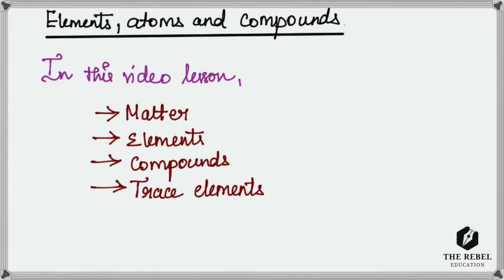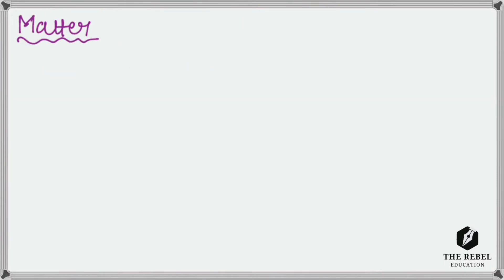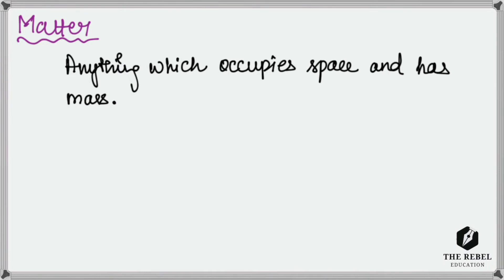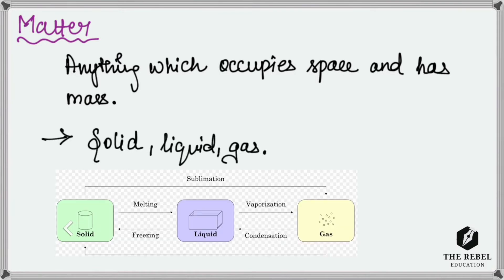First let's start with matter. If you take Earth, all things including us are made up of matter. We all know what matter is, right? Anything which occupies space and has mass is called matter. On Earth, matter is found in three different states: solid, liquid, and gas.